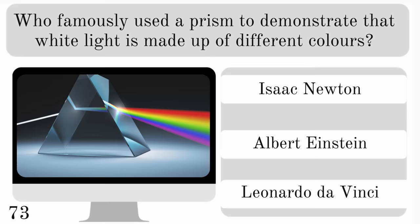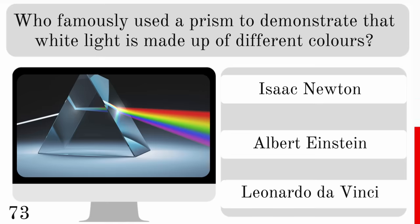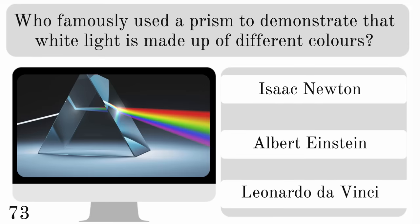Who famously used a prism to demonstrate that white light is made up of different colours? Isaac Newton, Albert Einstein or Leonardo da Vinci? And that again is Isaac Newton.